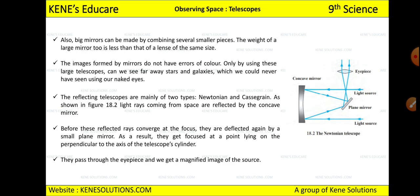The reflecting telescopes are mainly of two types. Remember: in a reflecting telescope we use a concave mirror. The two types of reflecting telescopes are the Newtonian type and the Cassegrain type.